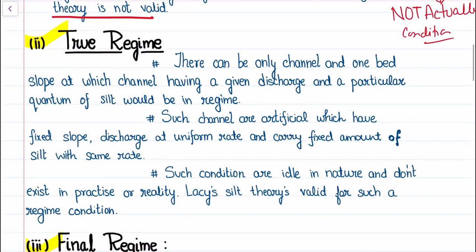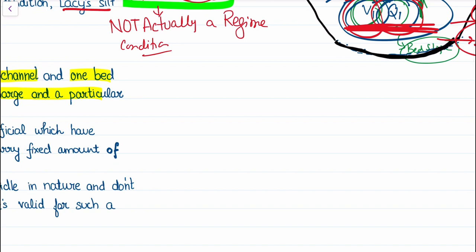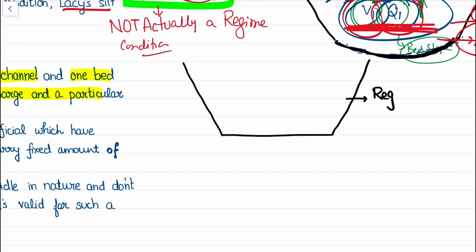Then Lacy discussed another regime condition called the true regime. A true regime condition is one where there can be only one bed slope at which a channel having a given discharge and a particular quantum of silt will be in regime. This means that a channel section will be in a regime state for a specific discharge value, at a specific velocity, for a specific type of silt or soil particles at the canal bed.